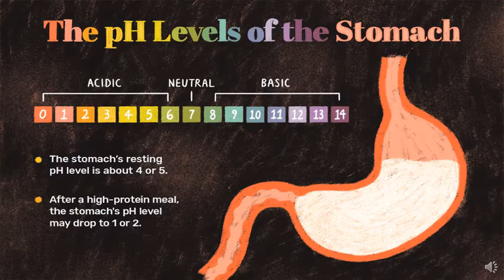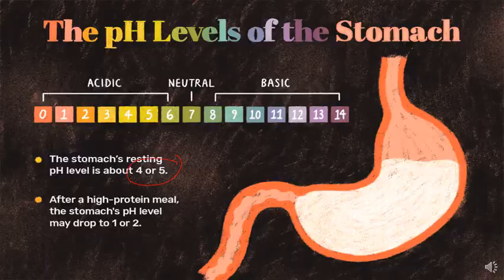The stomach's resting pH is about 4 to 5. After a high-protein meal, it drops to 1.